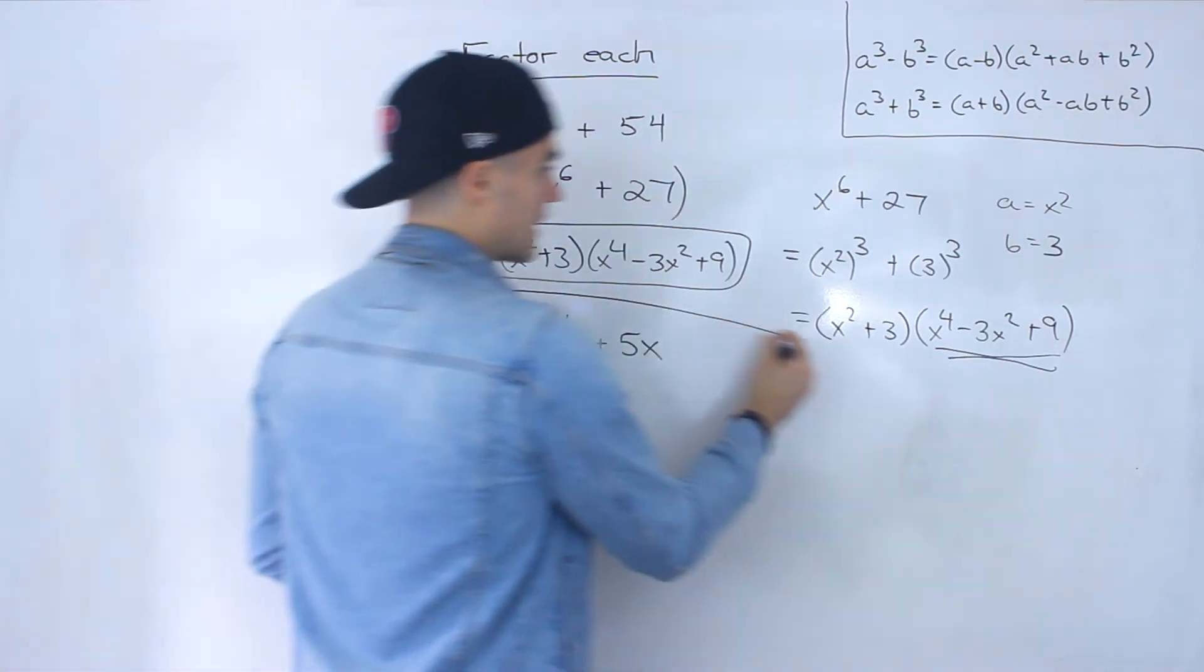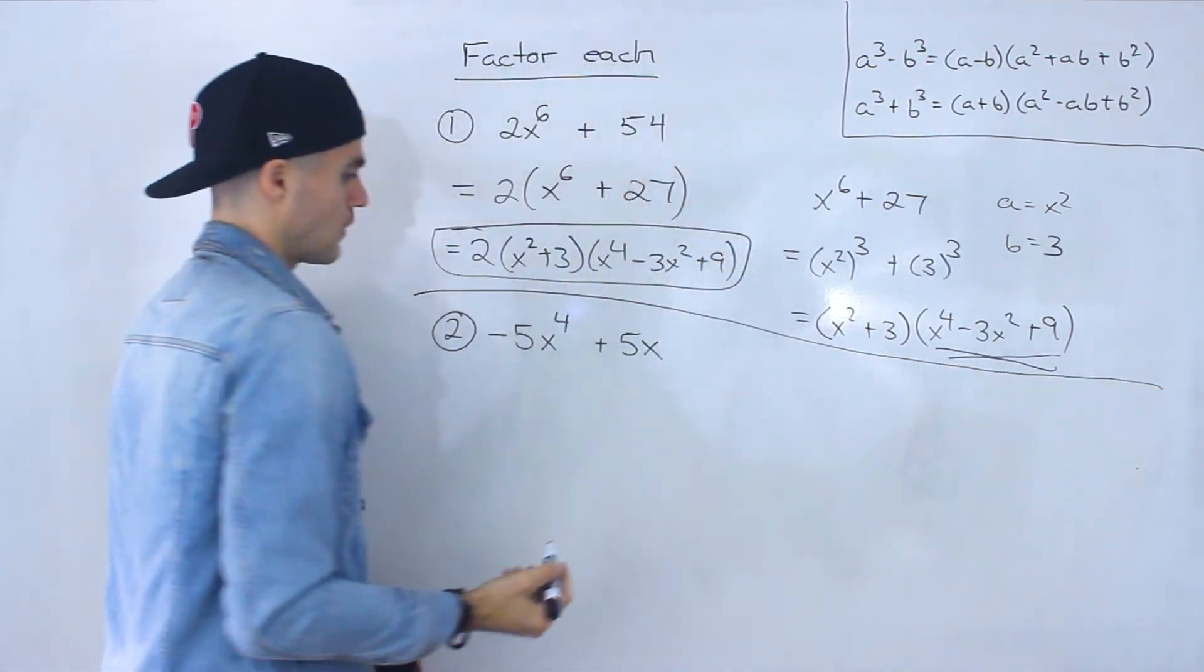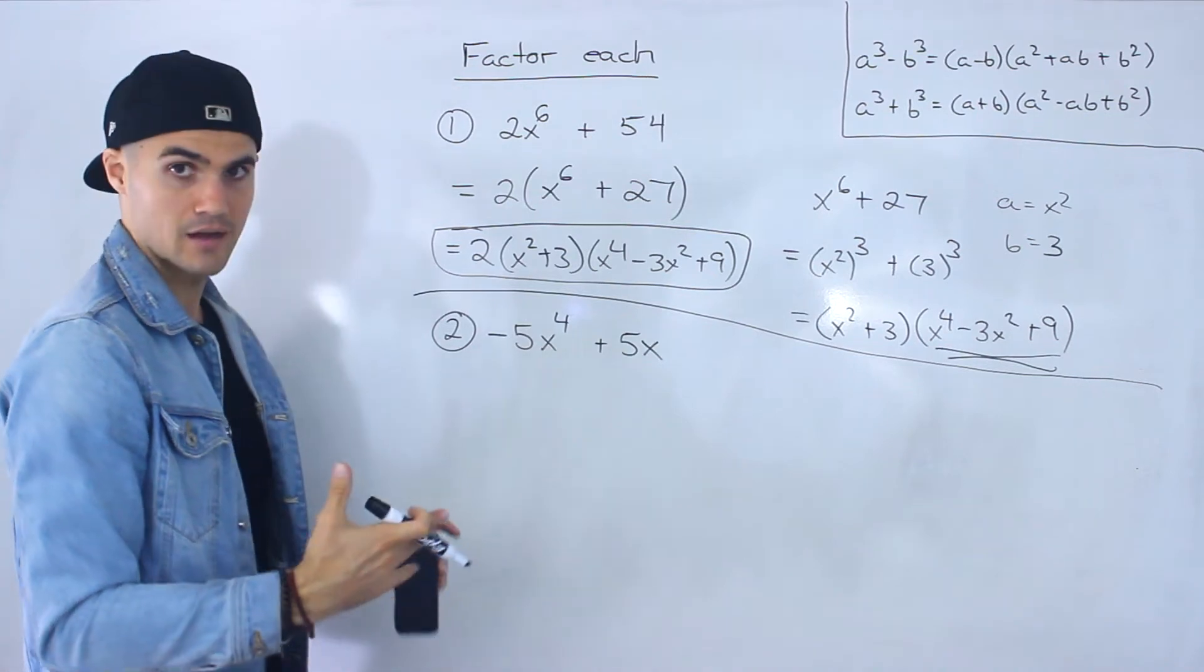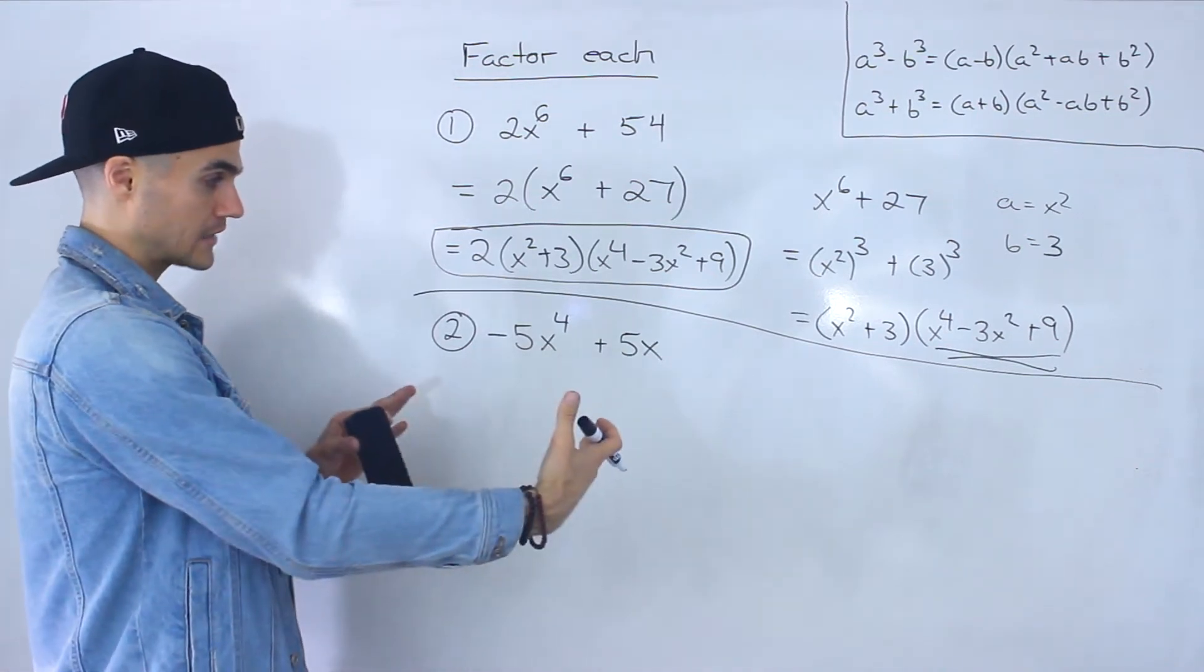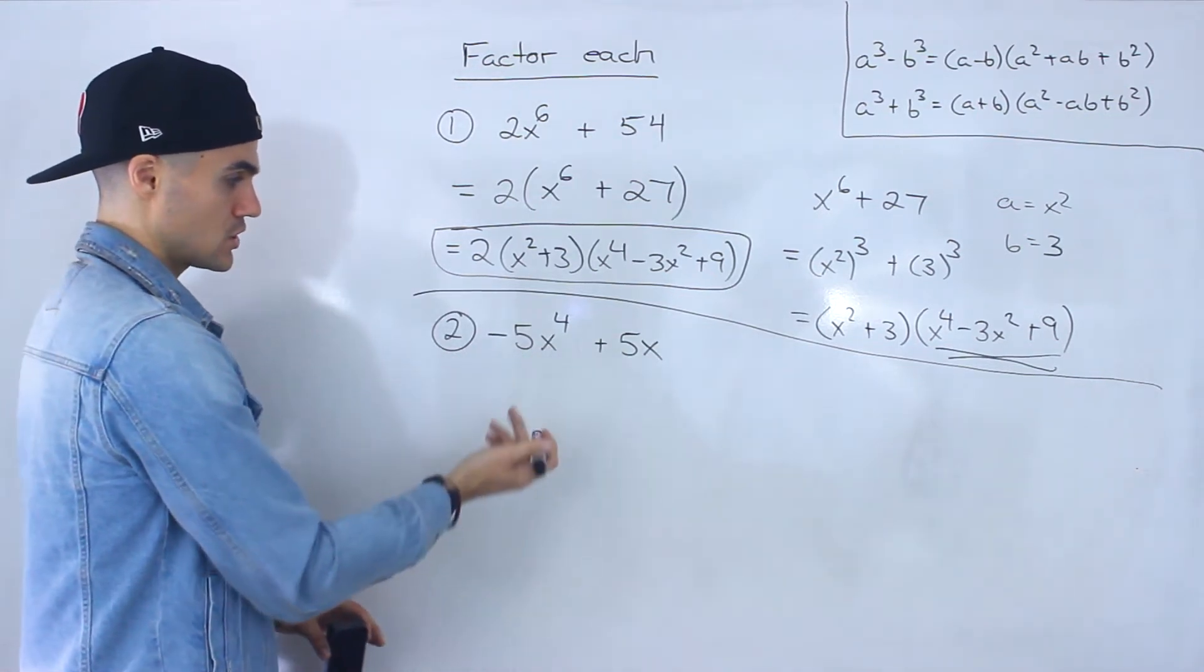Now what about number 2? We got negative 5x to the 4 plus 5x. So again, you always want to check, can you factor something out of all the expressions? Notice that we can.